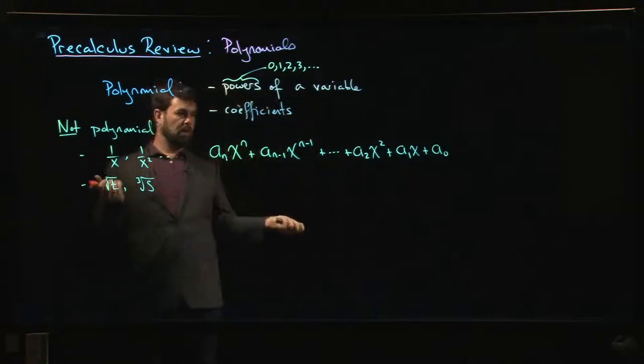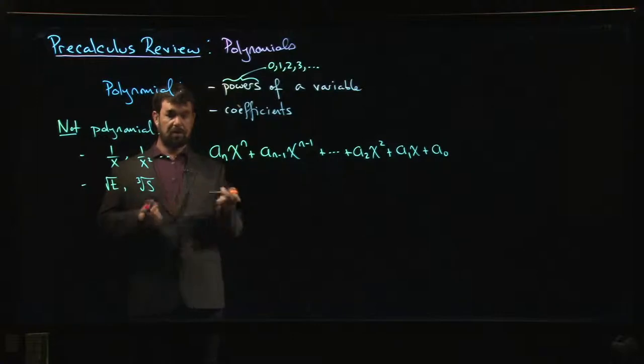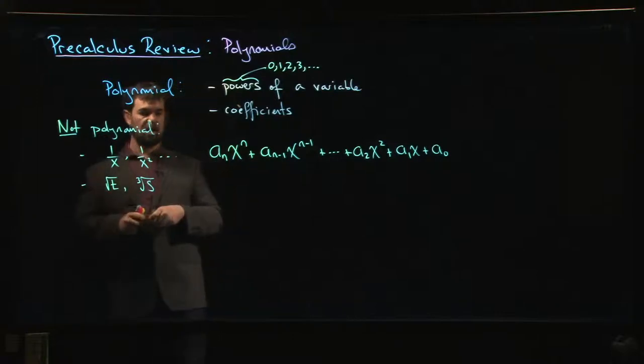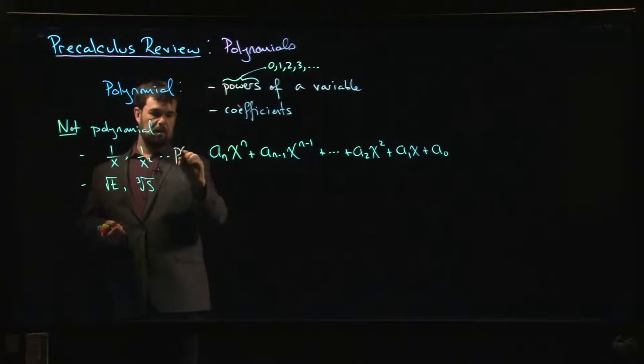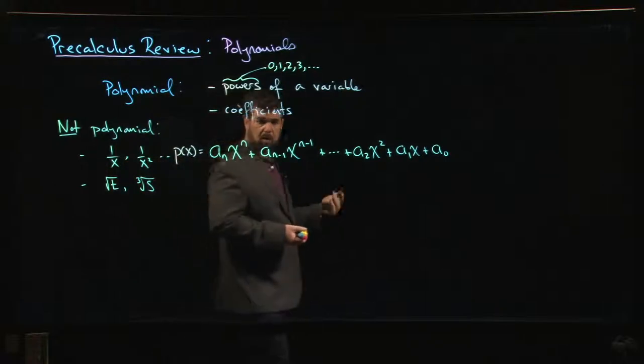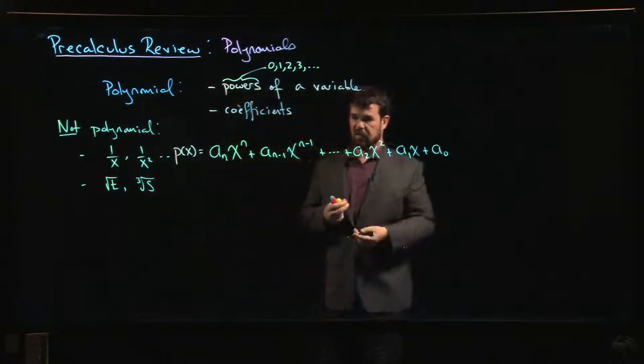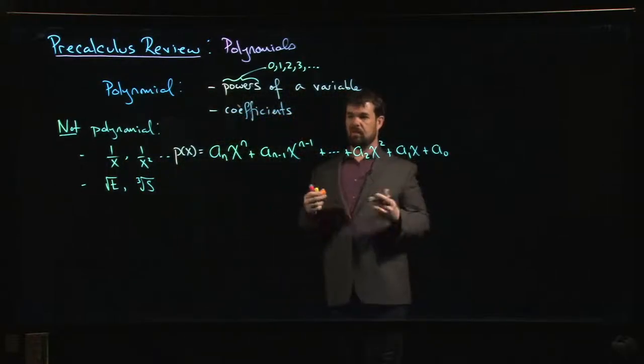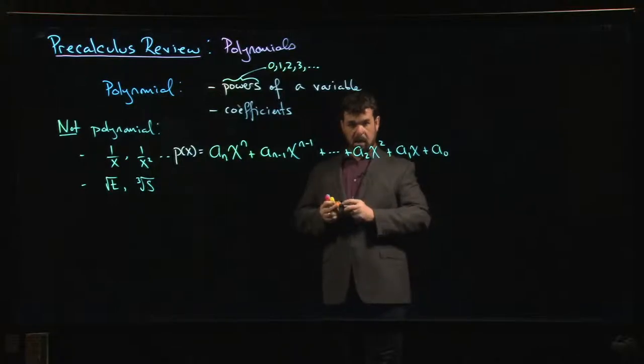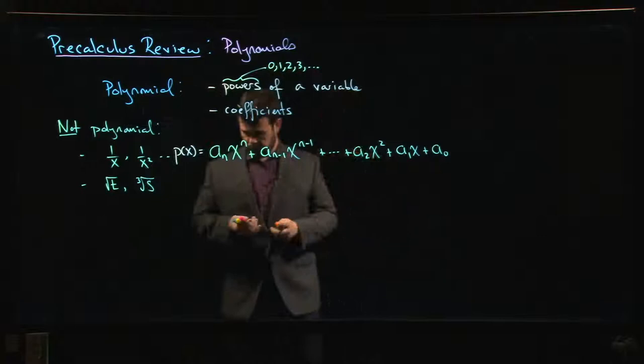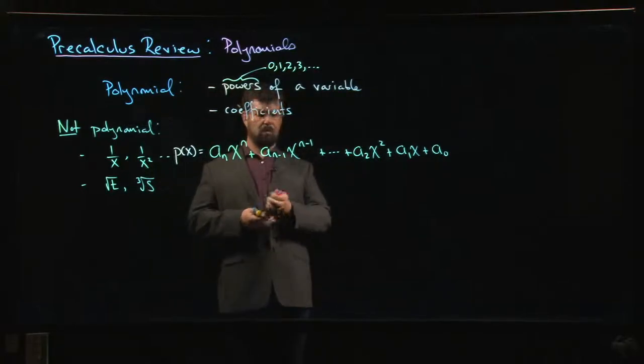Later on we might want to talk about this as a polynomial function. We might give it a name, we might call this p of x, think of it as a function. But we're not yet at the point where we necessarily need to think in terms of functions. We just want to think of these as expressions with a variable because we want to talk about how to manipulate them, do things like factoring. And we want to introduce some terminology.